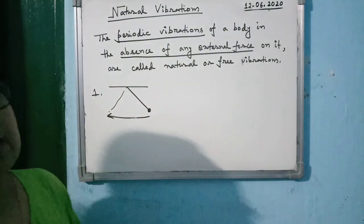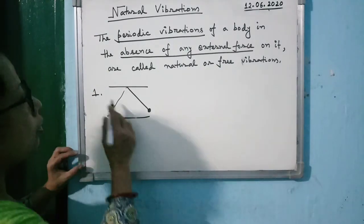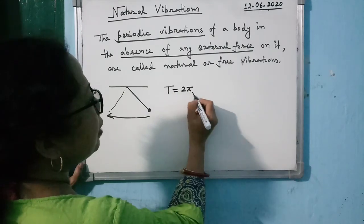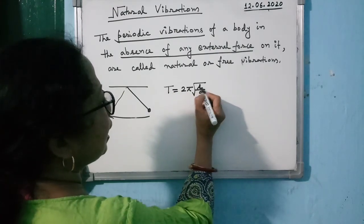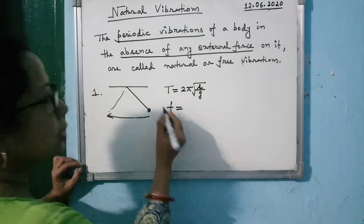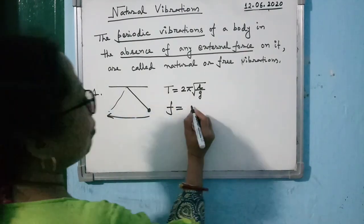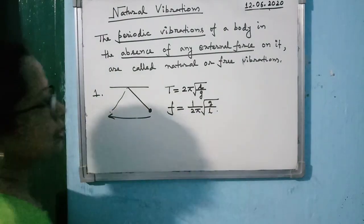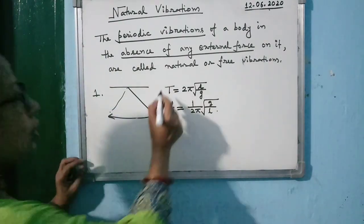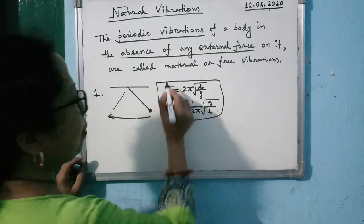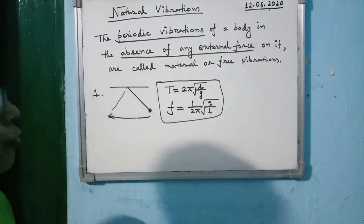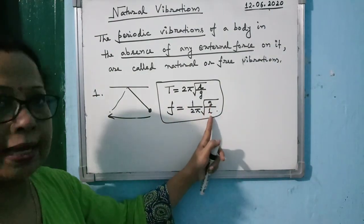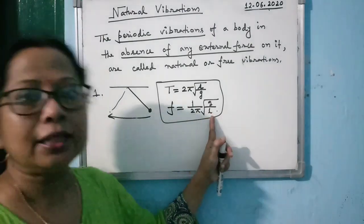This is one example of natural vibration. When a pendulum oscillates, the time period is given by 2π√(L/g), and the frequency of vibration of the pendulum is given by 1/(2π) × √(g/L). L is the effective length of the pendulum, and g is the acceleration due to gravity.